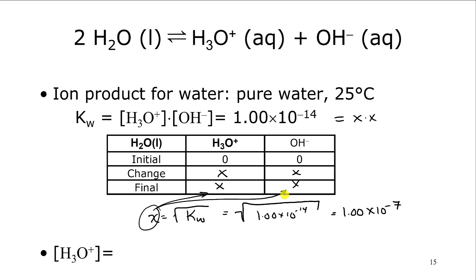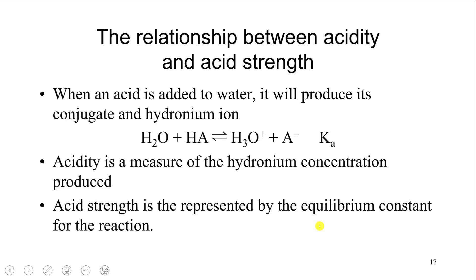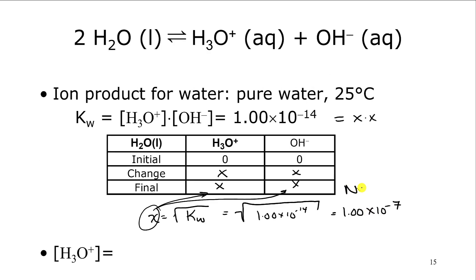Pure water has both a hydronium ion concentration of 10⁻⁷ and a hydroxide ion concentration of 10⁻⁷, and it's considered neutral because those two are balanced. Don't get that confused with a neutralization reaction — that just means hydronium and hydroxide put into a solution have canceled each other out. Here, neutral refers to the amount of hydronium actually in the solution. The hydronium concentration in pure water is 1.00×10⁻⁷.